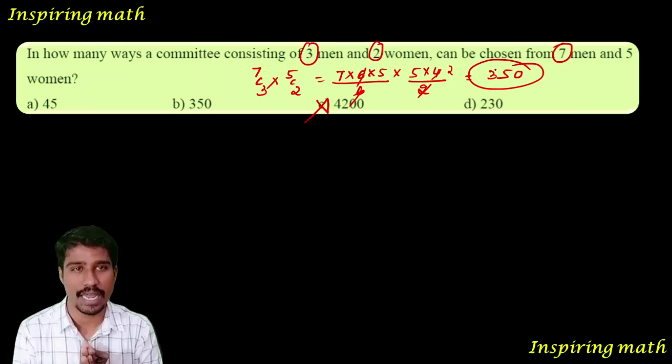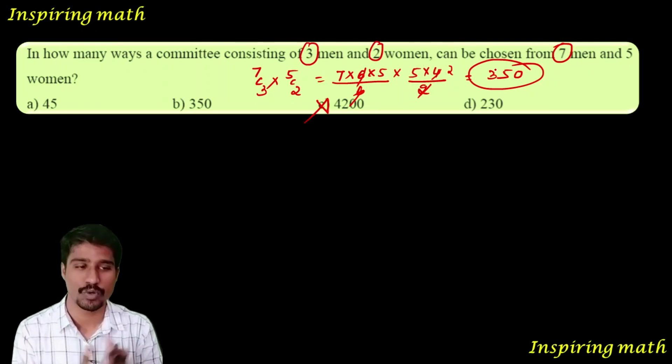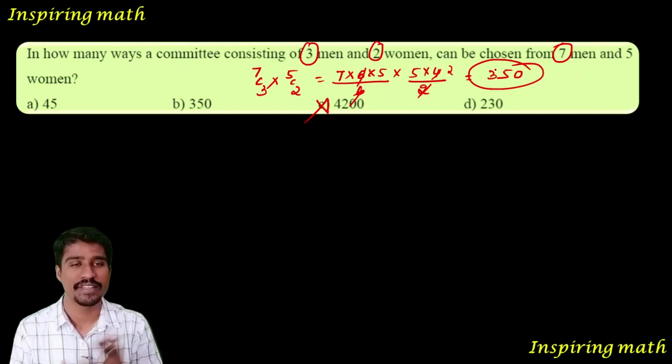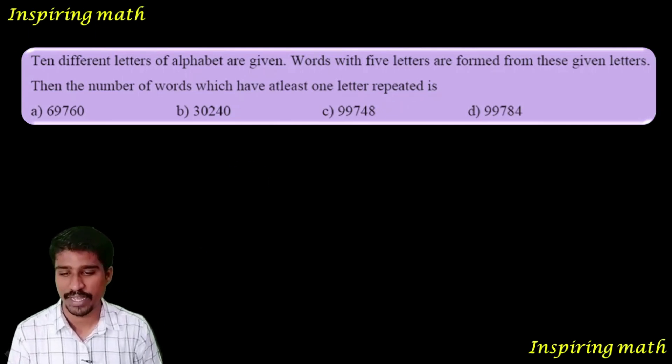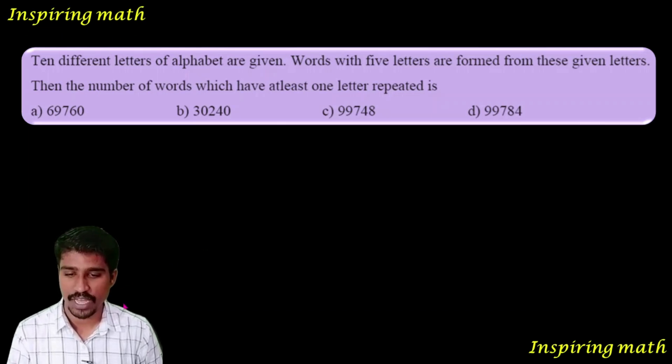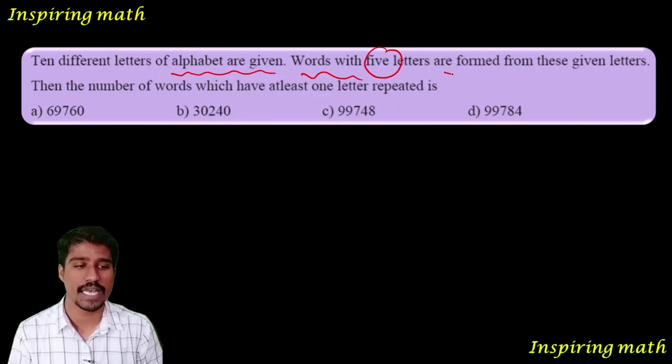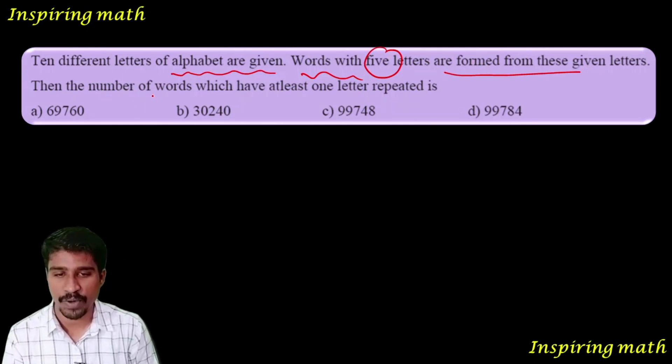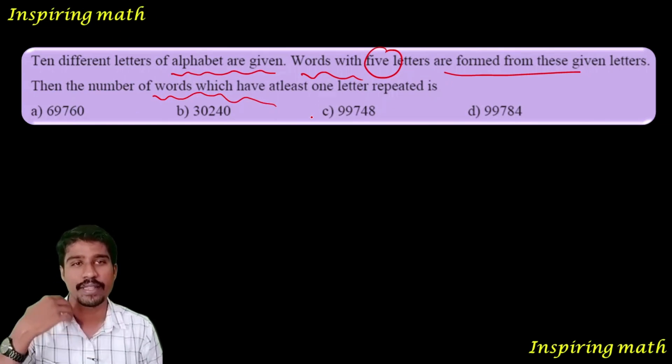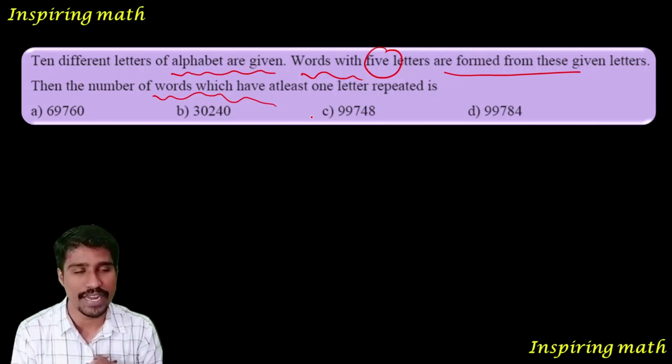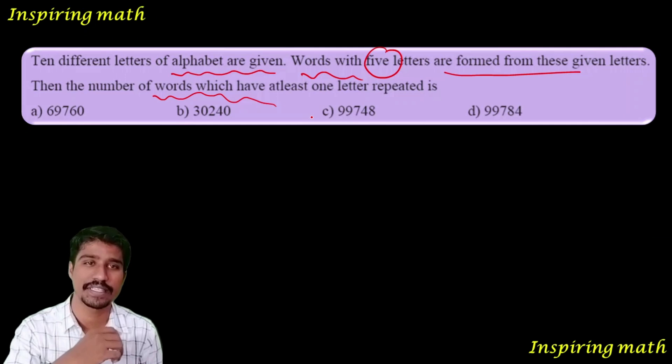Ten different letters of the alphabet are given. Words with five letters are formed from these given letters. Then the number of words which have at least one letter repeated. So if we have available total 10 letters.